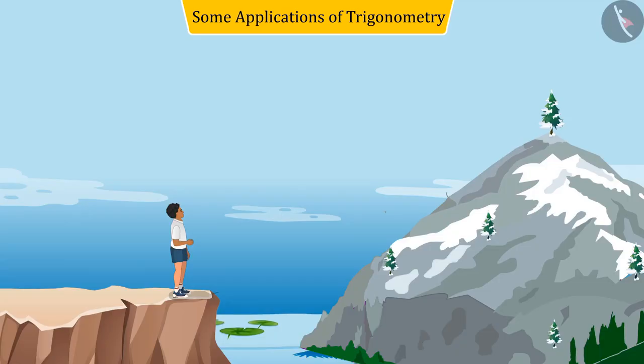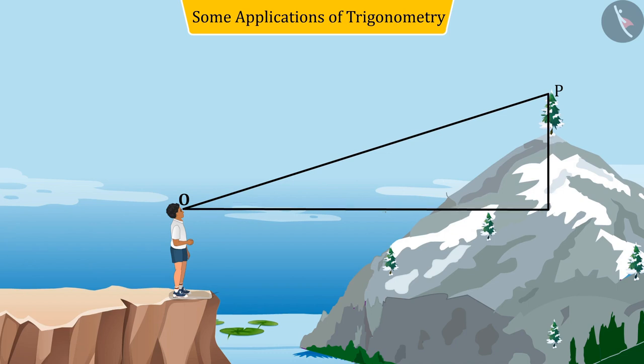When a person sees the top point P of an object from his point of view, i.e. point O, the line OP joining these two points is called the line of sight.